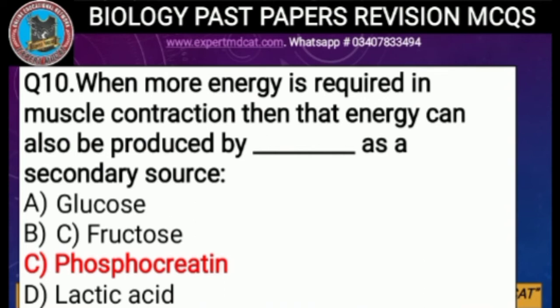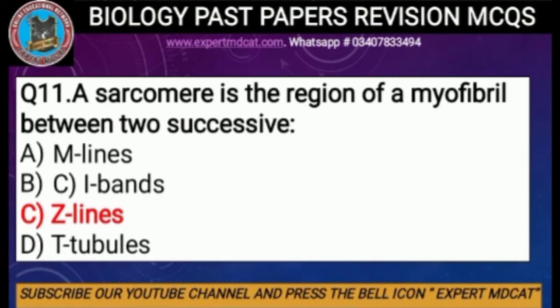Question number ten: when more energy is required in muscle contraction, that energy can also be produced by dash as a secondary source — options are glucose, fructose, phosphocreatine, or lactic acid. The correct option is C, phosphocreatine, because the secondary source is phosphocreatine while the primary source is ATP.